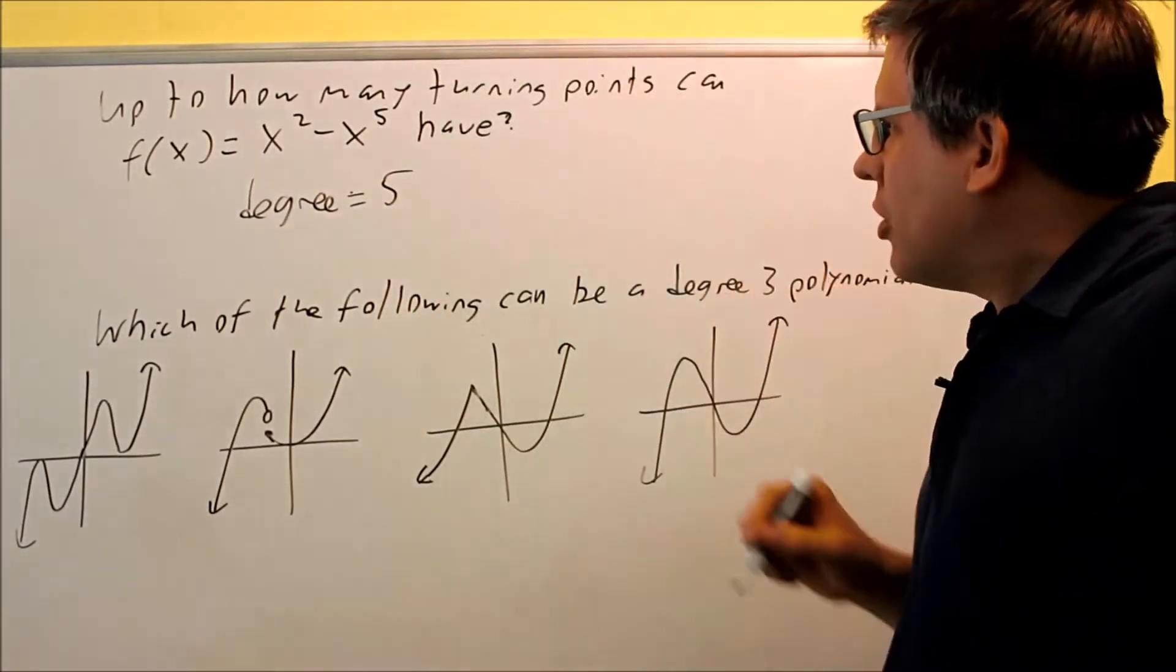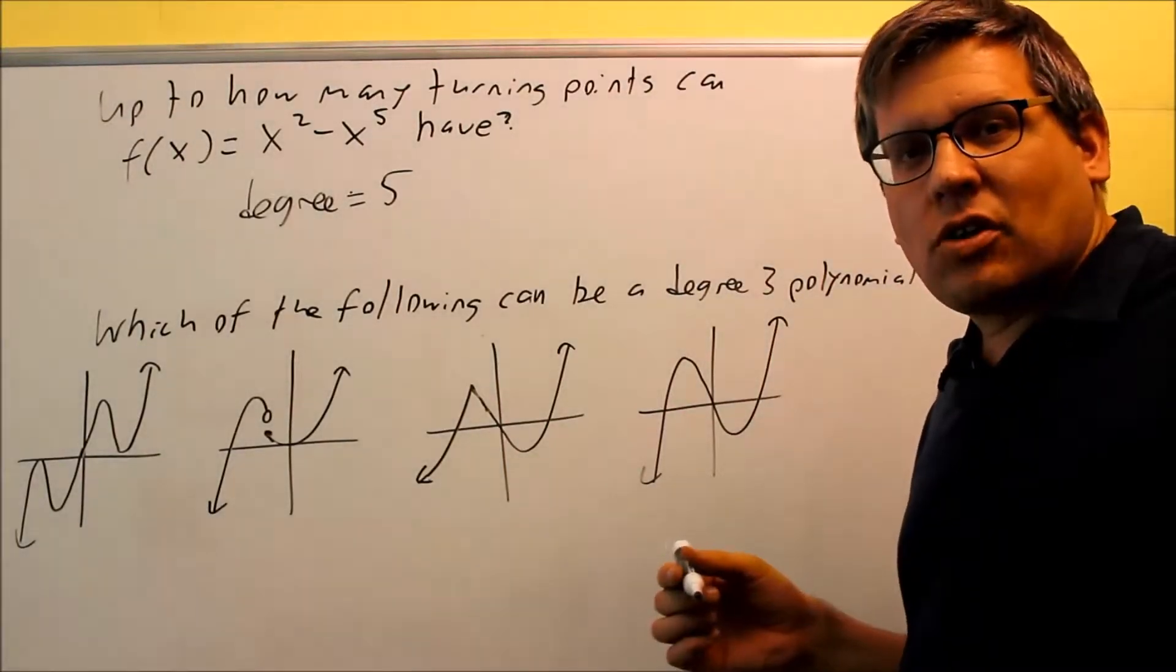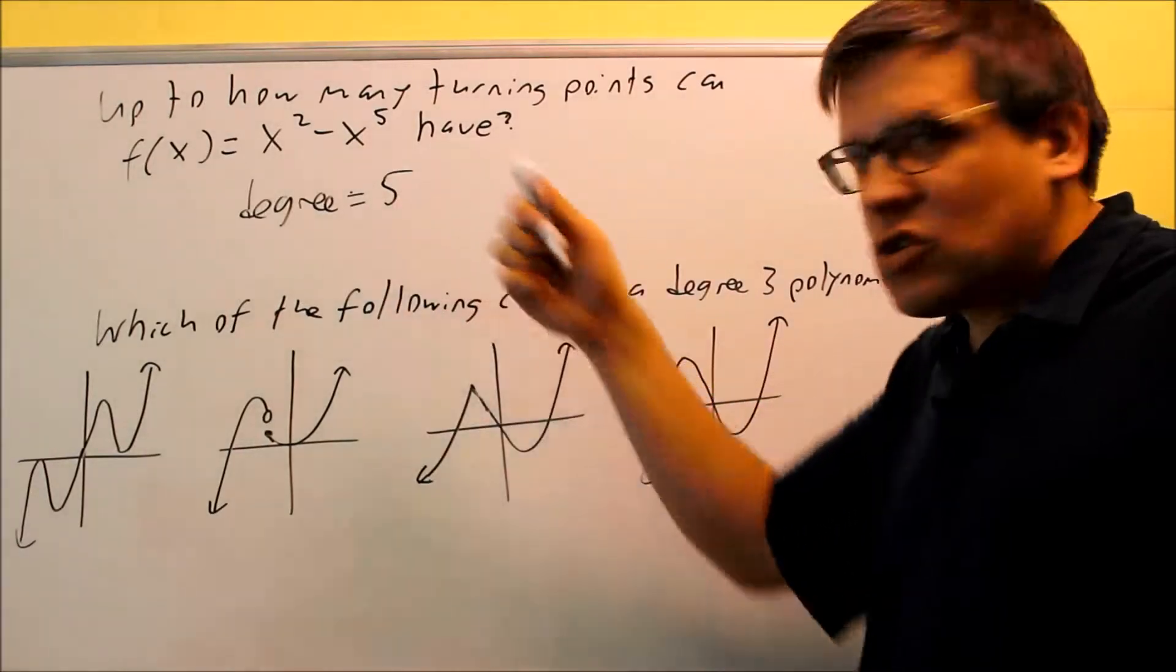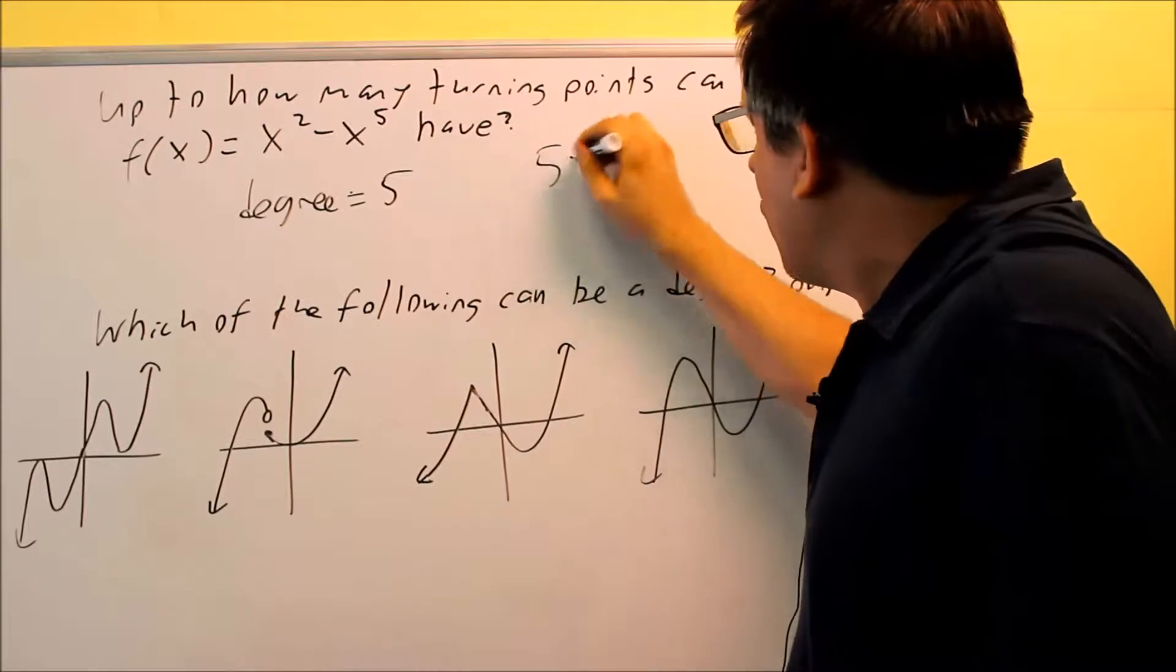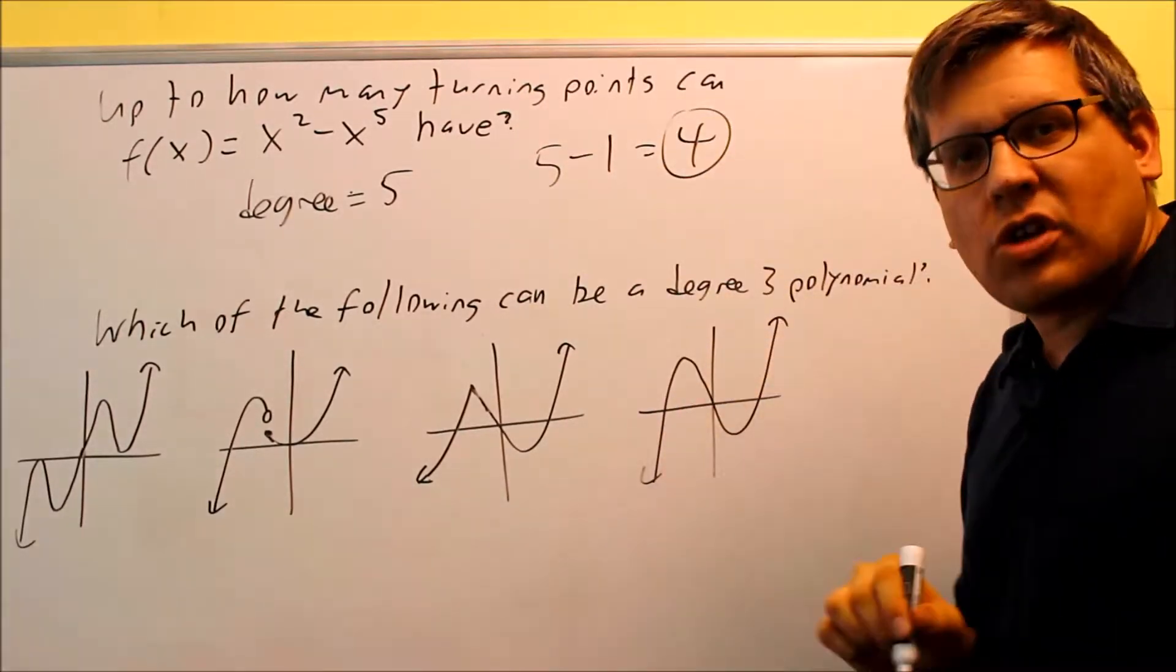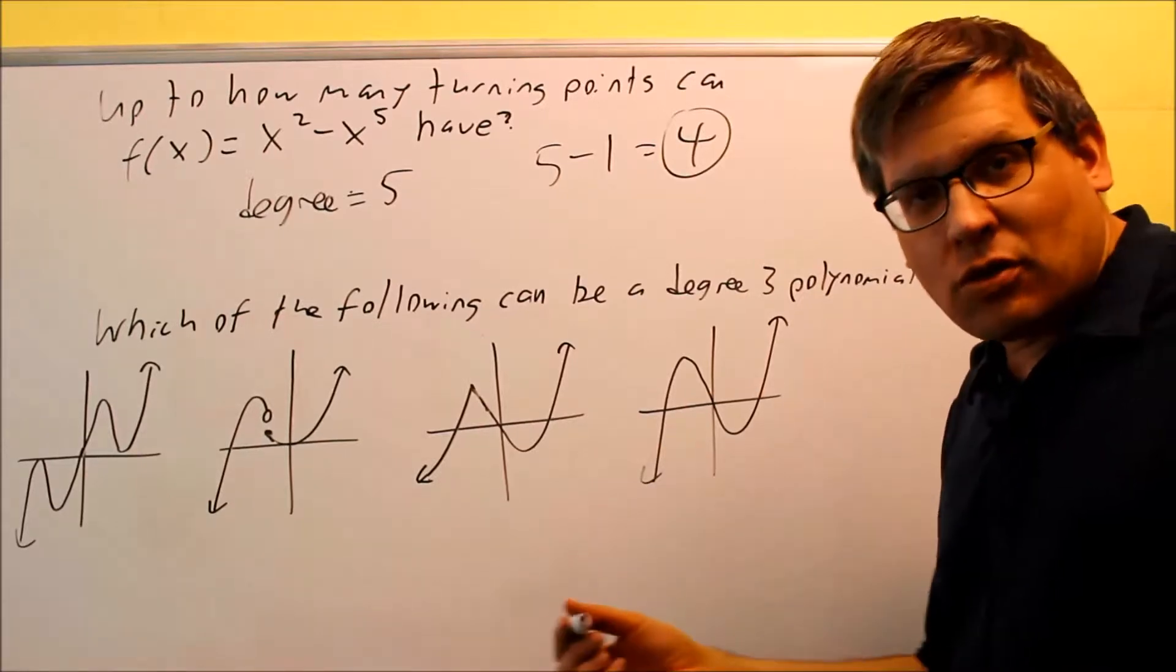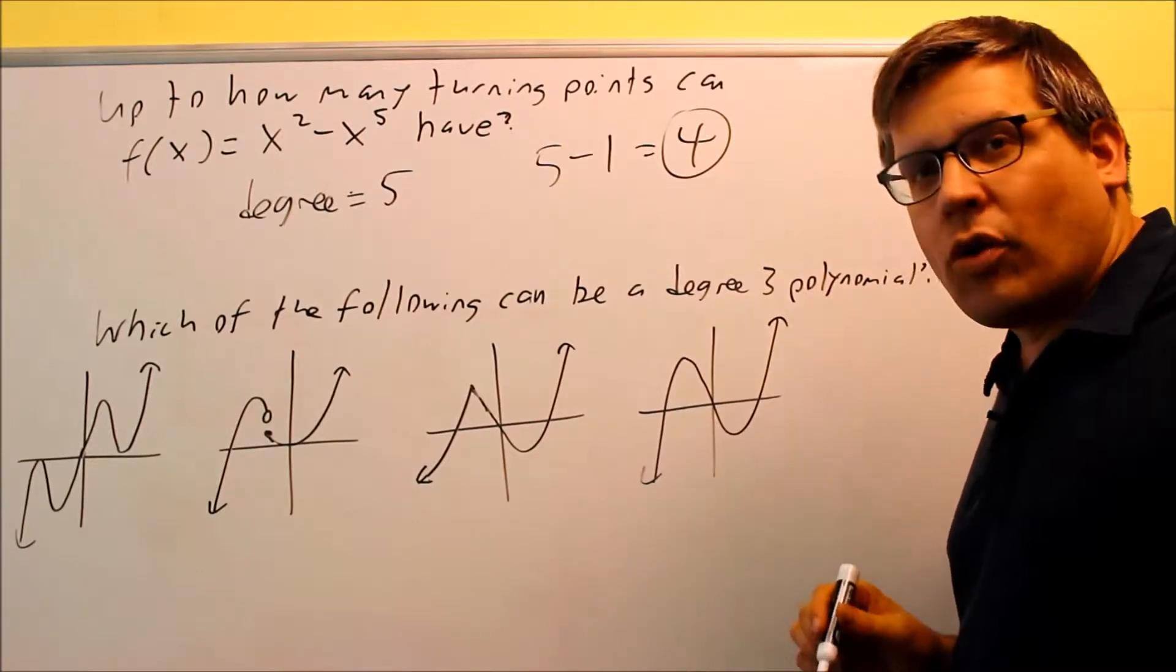So up to how many turning points means it's not going to have exactly that many turning points. That means it could have n minus 1 or less turning points. So the answer up to how many turning points can you have? You're going to do 5 minus 1 equals 4. So that's the most it could have. Now it could definitely have less turning points than that, but that's the most it could possibly have. So it's going to be 4.